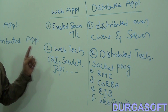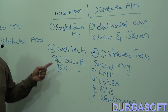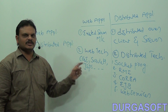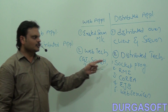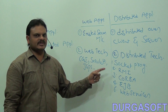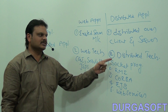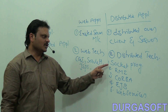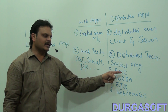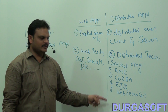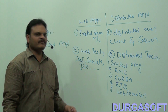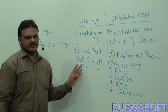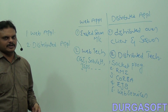So to summarize the technology difference: web applications use web technologies like CGI, Servlets, and JSP; distributed applications use distributed technologies like socket programming, RMI, CORBA, EJBs, and web services.